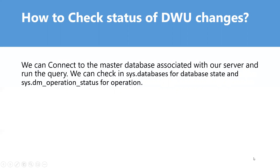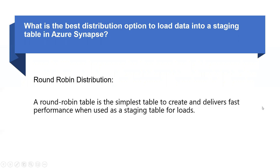What is the best distribution option to load data into a staging table in Azure Synapse? Round robin distribution is the answer. A round robin table is the simplest table to create and delivers fast performance when used as a staging table. It distributes data evenly across the table but without any further optimization. A distribution is first chosen at random, then buffers of rows are assigned to distributions sequentially. Round robin is quick to load data, though query performance can often be better with hash-distributed tables.